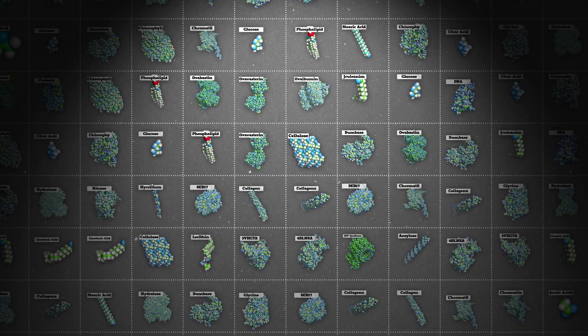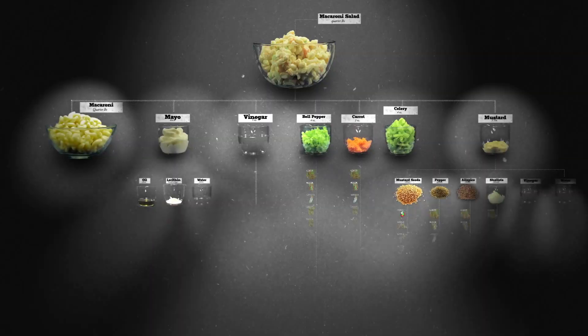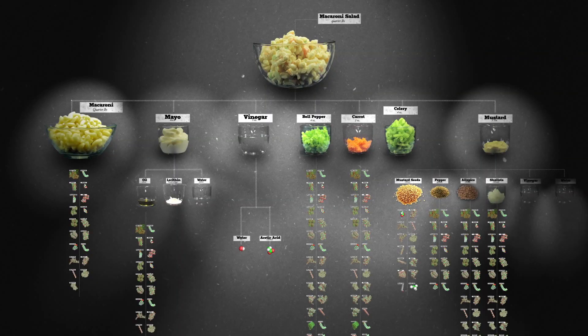As we'll see, these molecules are made of the same stuff, just mixed together in different ways. Let's go back to our macaroni salad. We've already unmixed things physically as much as we can. Now we'll go further and unmix things chemically by breaking some bonds.